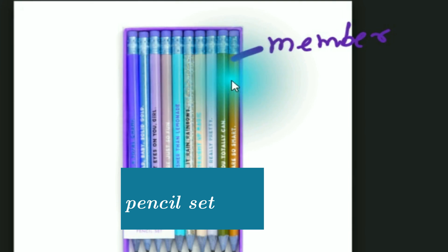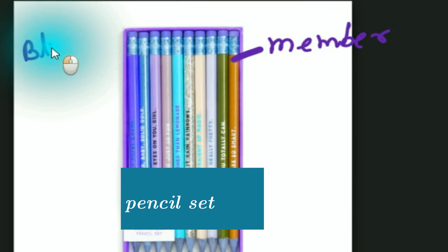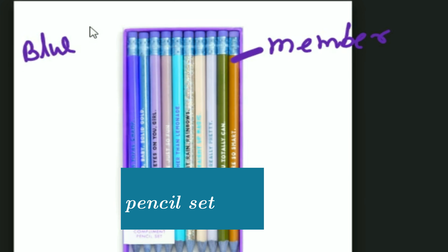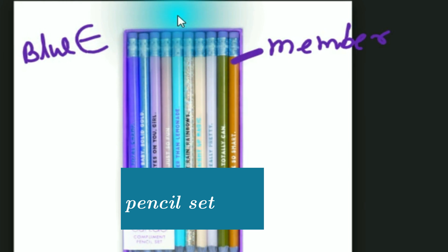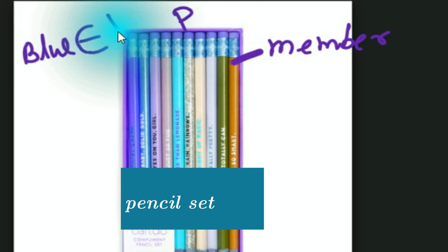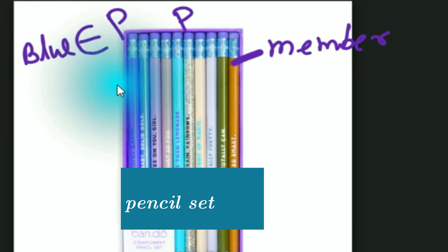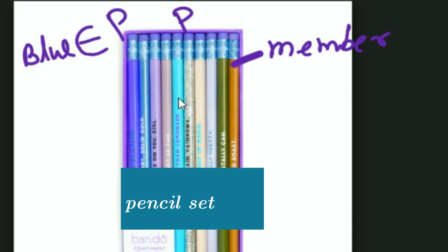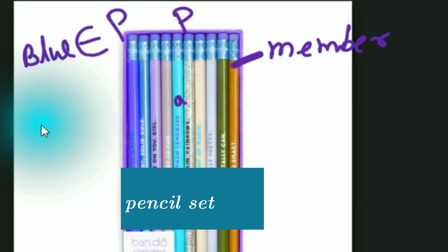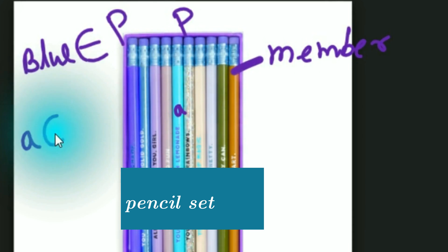How will you write this? Suppose this is a blue pencil. This blue pencil is a member of this set. We will write in set notation like this: suppose the name of this pencil set is P, so blue belongs to P. If this yellow pencil's name is A, I will write A belongs to P. It means A is a member of this set.